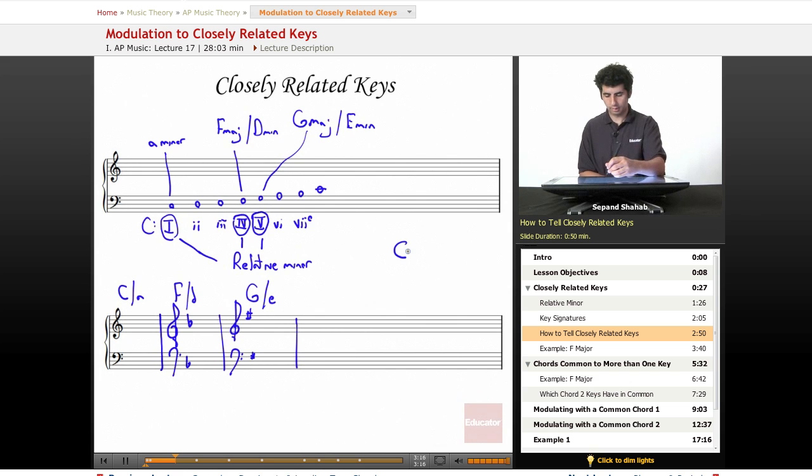And then the relative minors of those are all considered close. So in the end, we've got C major and it's closely related to A minor, F major, D minor, G major, and E minor.